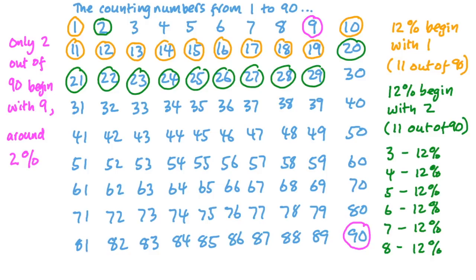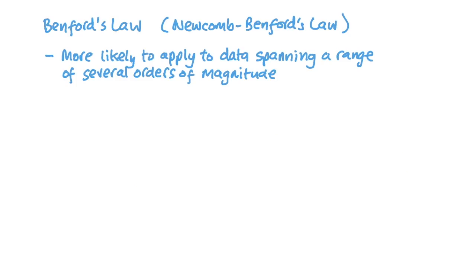For different ranges of numbers, it seems obvious that fewer numbers will begin with the higher digits. The law works best on numbers that span a range of orders of magnitude, that is, powers of 10, so single digit, tens, hundreds, thousands, and so on, and don't have any artificially applied constraints.